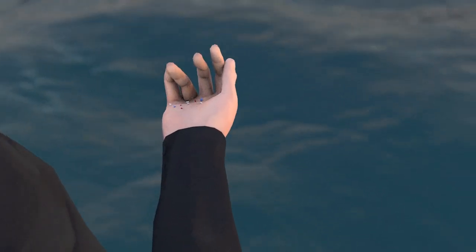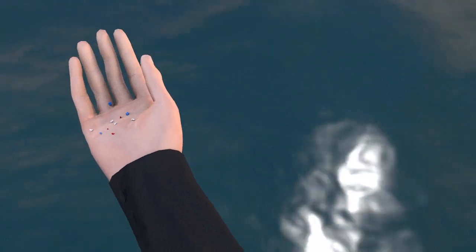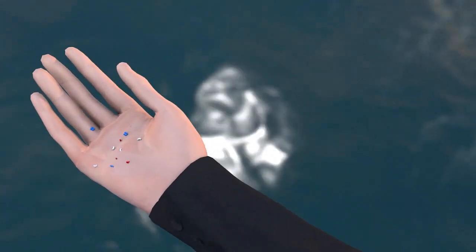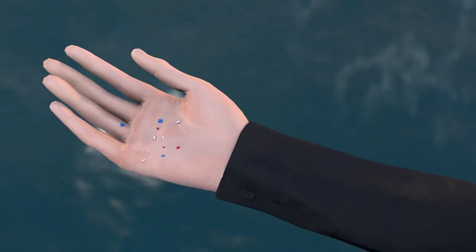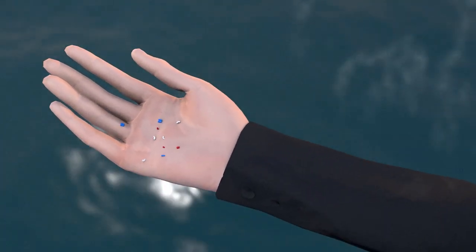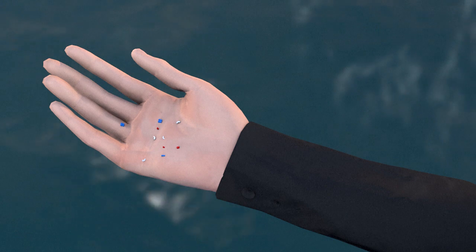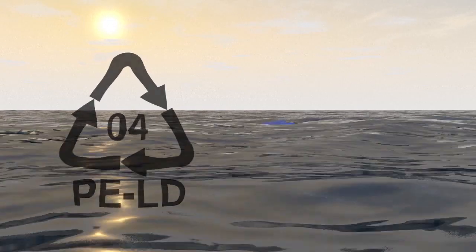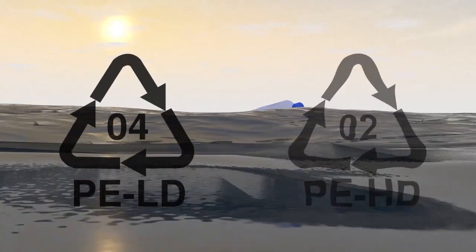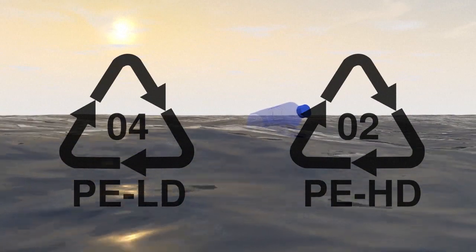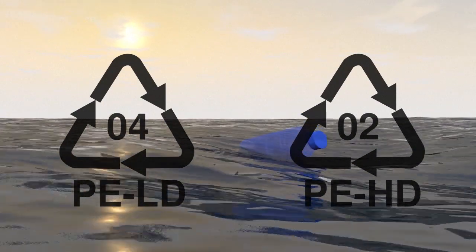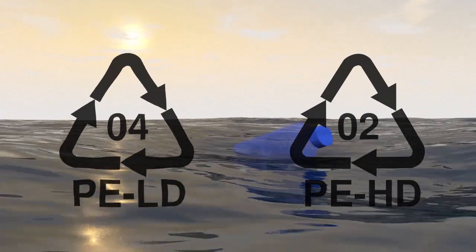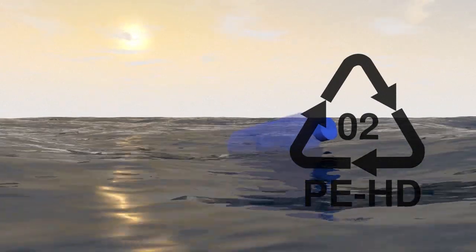Microplastics are plastic particles with dimensions of less than 5 mm. Some are so small they're invisible to the naked eye. Nylon and polyethylene, for example, a mixture of polymers and additives, are themselves microplastics created from tiny pellets known as nurdles.